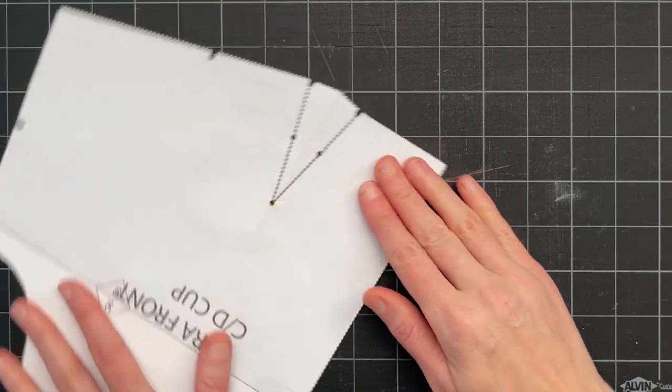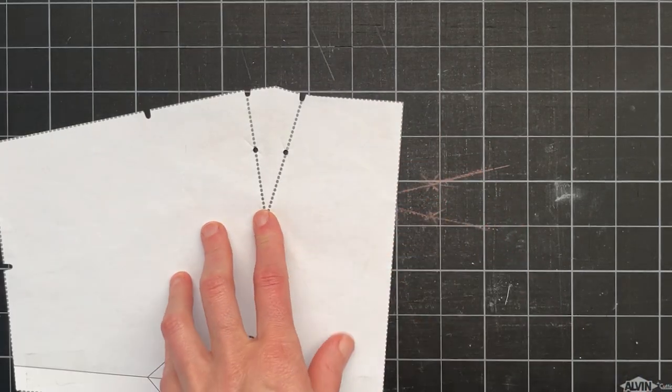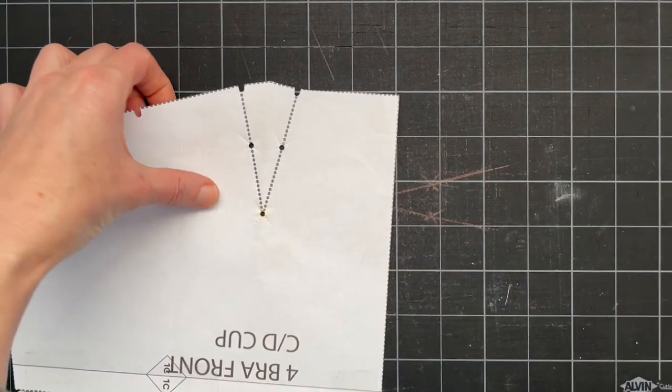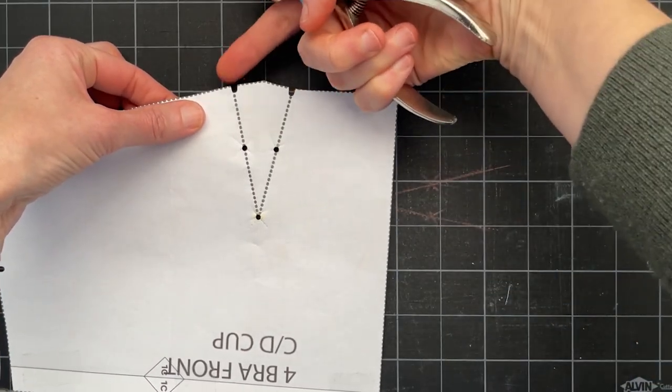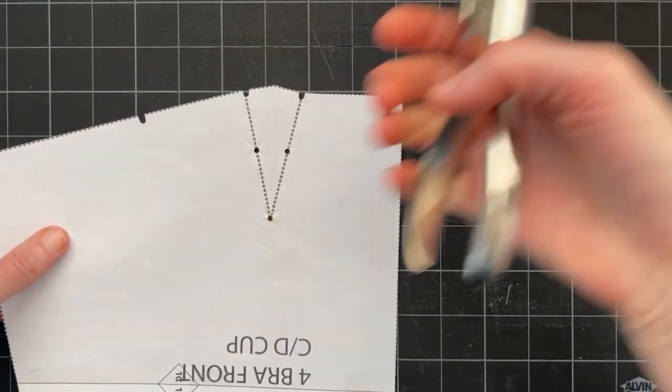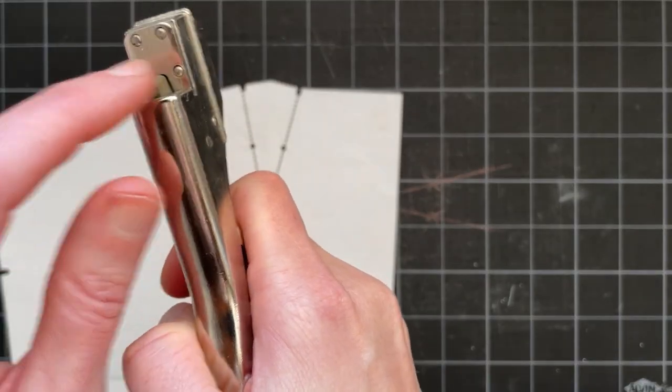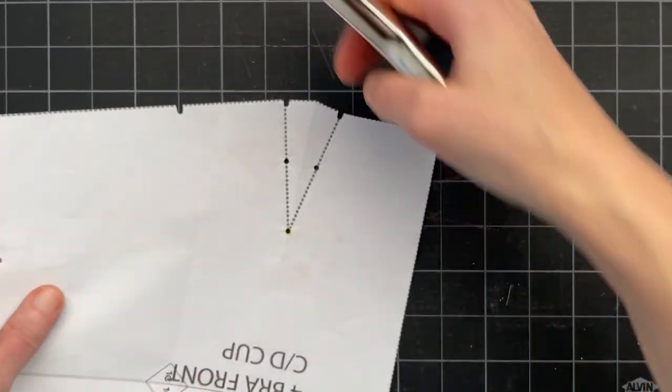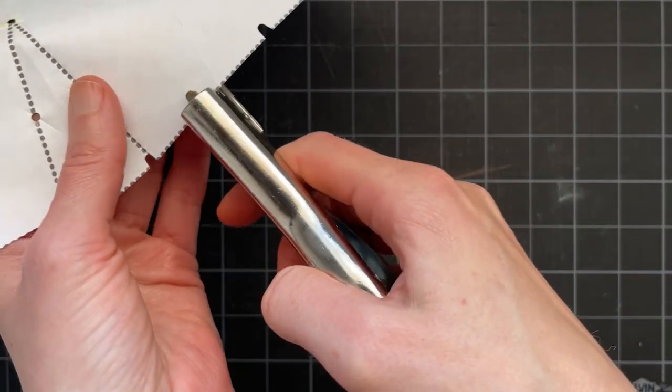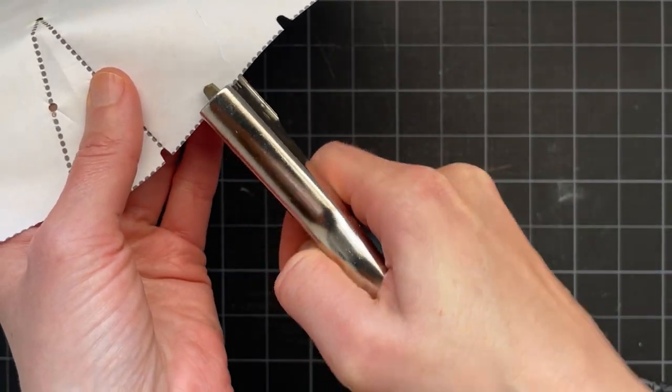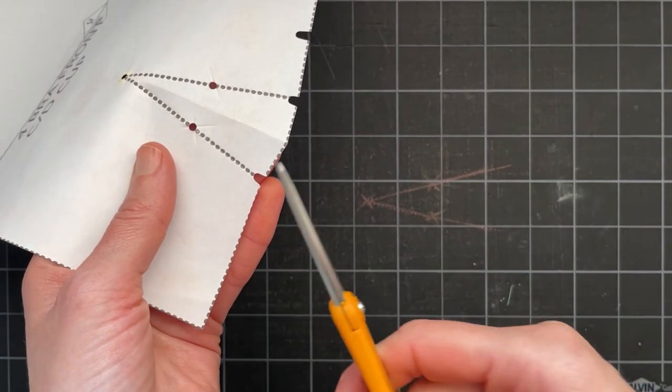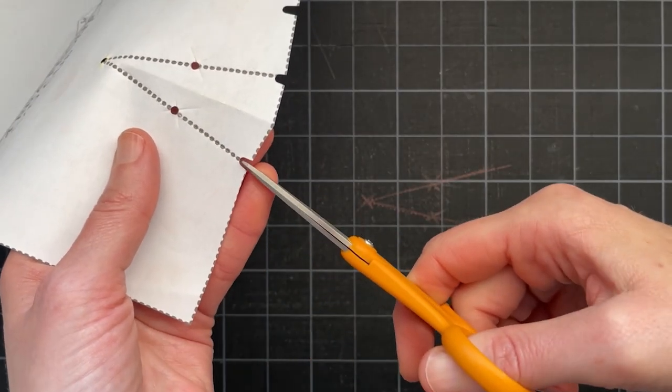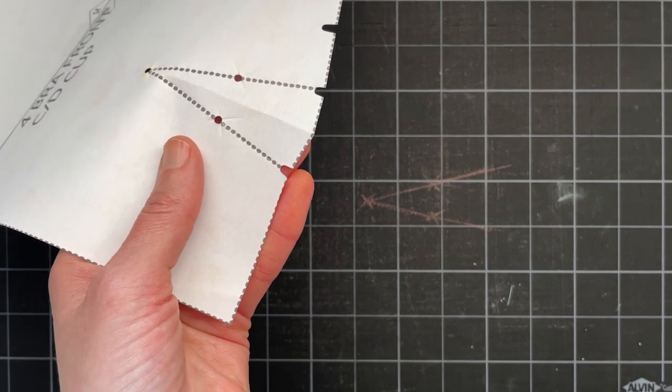To prepare my pattern for marking the dart I will use my pattern notcher to notch into the ends of the dart. This pattern notcher is like a hole punch but it cuts a little U out of the edge of the paper. You just put it on the edge, punch, and you get a U-shaped hole. This little U-shaped hole will allow me to come in with my scissors and clip the fabric just a little bit.